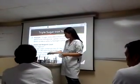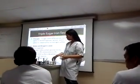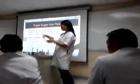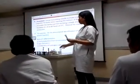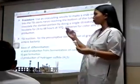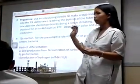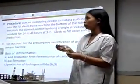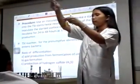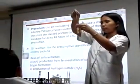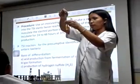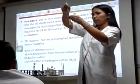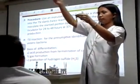For your TSI, how will you inoculate your TSI? You inoculate your butt. You stab twice, reaching to the bottom of the tube. So stab twice. You get your inoculum and then you stab twice, then you do streaking on the slant.